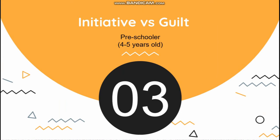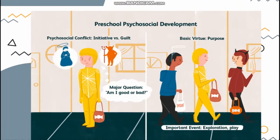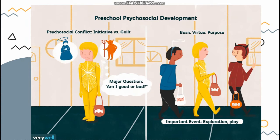Next, we move on to initiative versus guilt, occurring during ages four to five. In this stage, we learn to assert ourselves in social settings. If we succeed, we will develop initiative and feel more capable. If we fail, we will be left with more guilt and self-doubt. The major question is: am I good or bad? During important events such as exploration and play, the child must take initiative to do the right thing. The basic virtue they can obtain here is purpose.